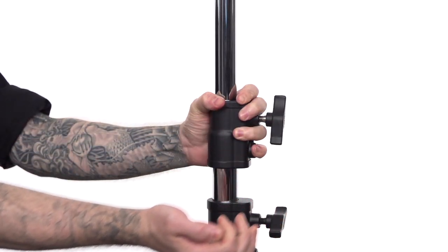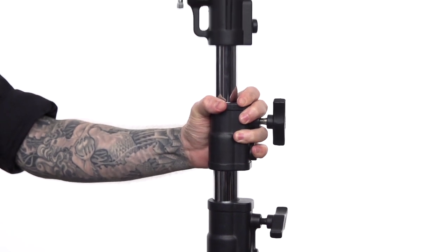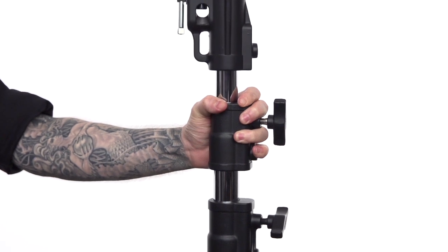This stand has spring cushioned riser sections and more space between the brake castings to protect your fingers and your equipment in case one of the brakes loosens unexpectedly.